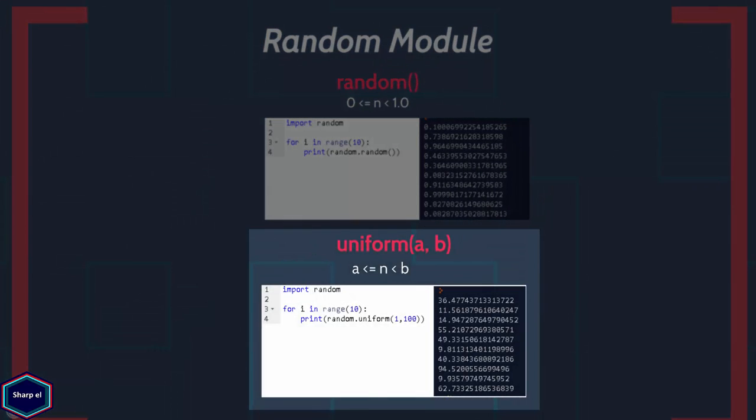The uniform() function takes two arguments a and b, and returns a random floating point n from a uniform distribution such that n is greater than or equal to a but less than b.